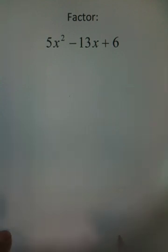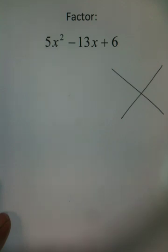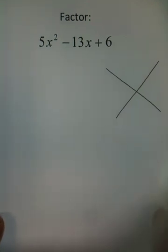When factoring trinomials, you want to use something which I call the magic X. The magic X is actually just a thought process that helps you keep your thoughts organized so that when you actually factor this, you can understand where you're getting information and how to use it.